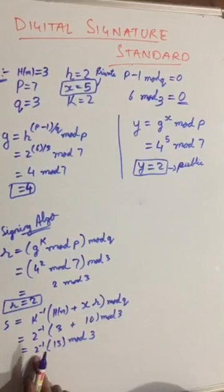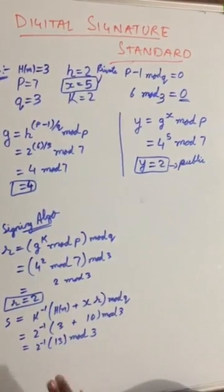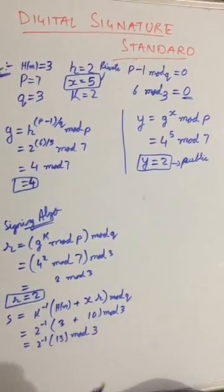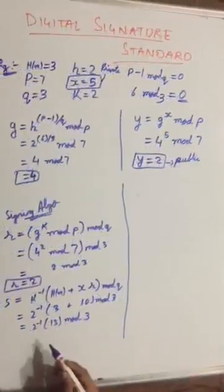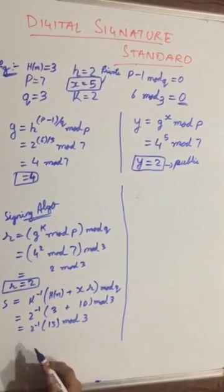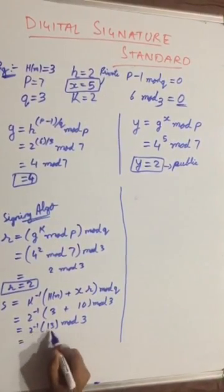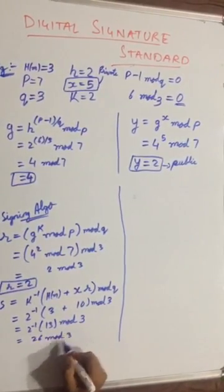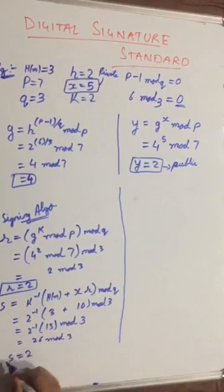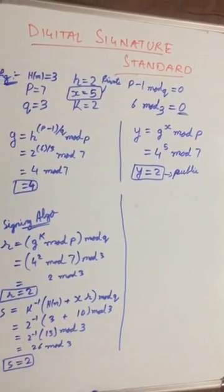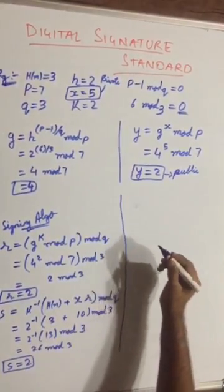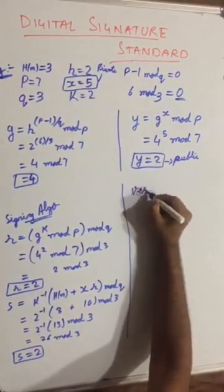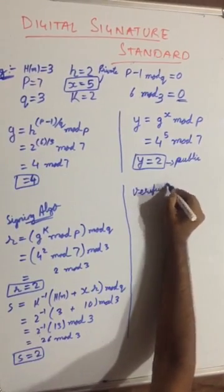We can also verify: 5 times 2 is 10, and 10 mod 3 is also 1, so 5 works too. For ease we substitute 2 inverse as 2. So s equals 2 into 13 equals 26, mod 3, which gives s equal to 2.